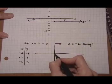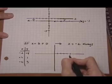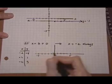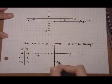Setting up the graph with 1 unit per square, marking the scale from 5 to minus 5 on both axes.